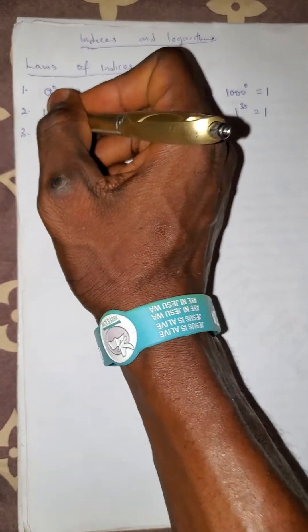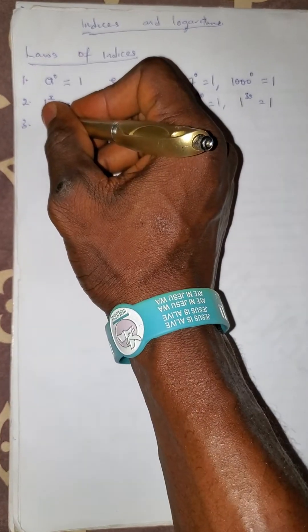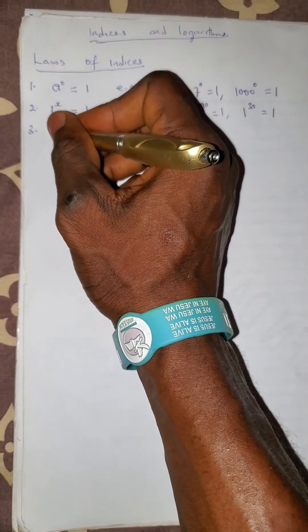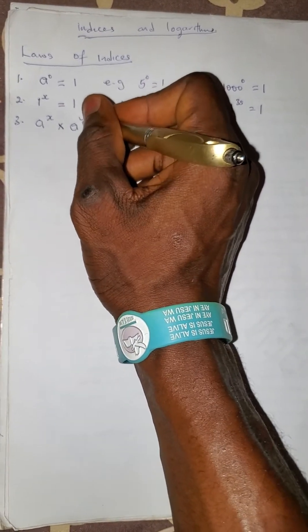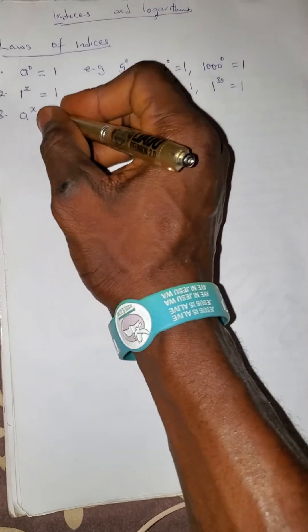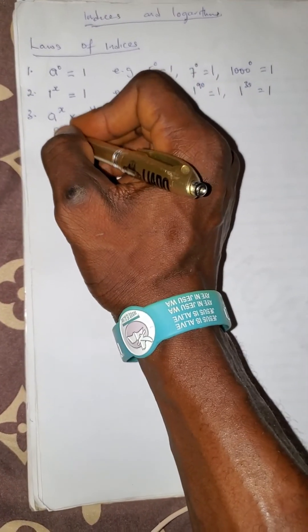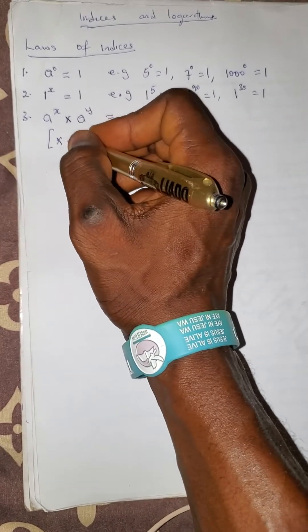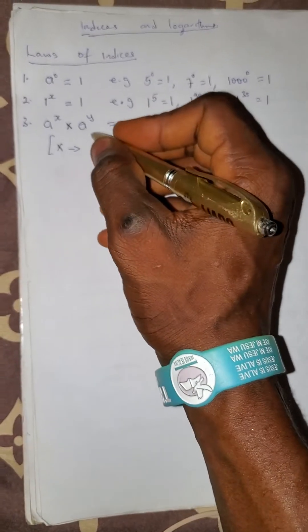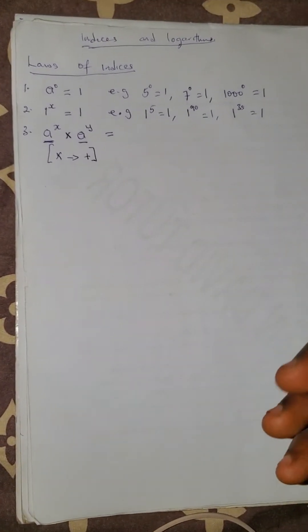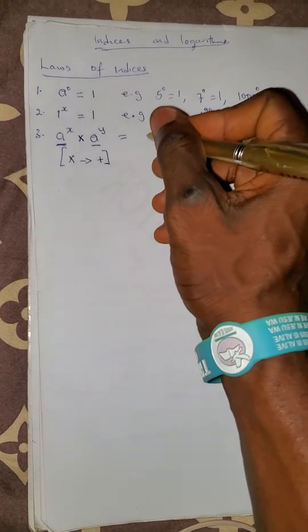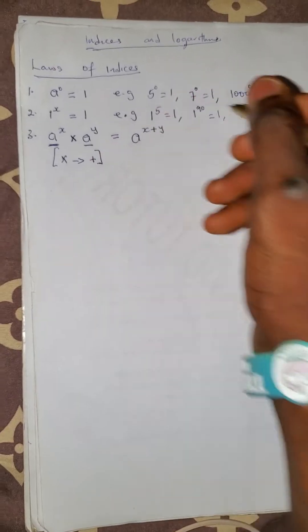Number 3: if you have a raised to the power x, multiplied by a raised to the power y — since this is multiplication of the same base — the law says this multiplication will change into addition. So it becomes a raised to the power x plus y.